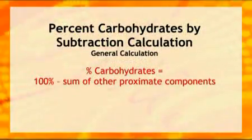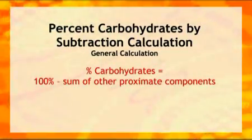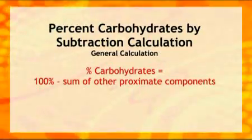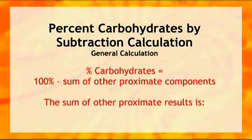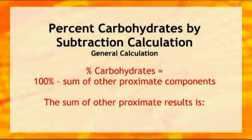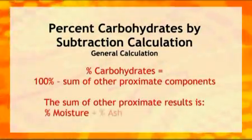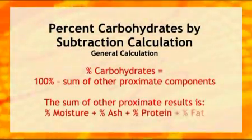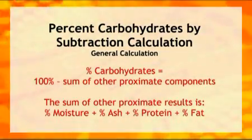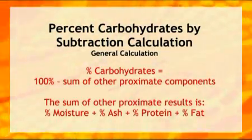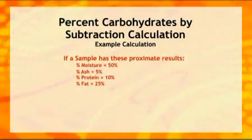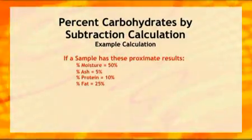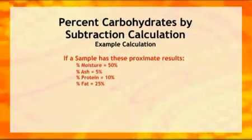The percentage of carbohydrates by subtraction can only be determined after the other proximate analyses have been completed. The required proximate analyses for the calculation of carbohydrates are percent moisture, percent ash, percent protein, and percent fat — referred to as the other proximate components. The carbohydrate percentage is calculated by adding the results from the other proximate components and subtracting that sum from 100.